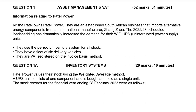That tells you how you calculate the cost of sales. To calculate the cost of sales, you take your opening stock, plus purchases, minus returns, and subtract your closing stock. Now, the inventory system says that Patel Power values their stock using the weighted-average method. I'll highlight that. For this question, you need to know the weighted-average method formula. We will discuss it shortly.